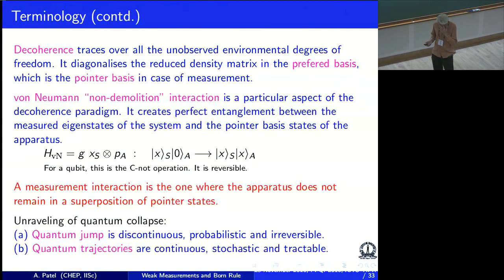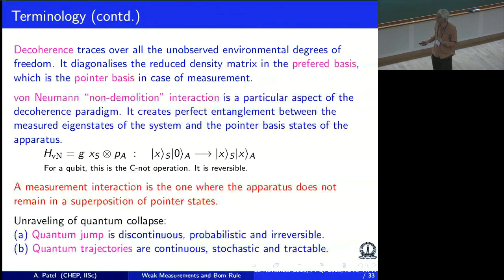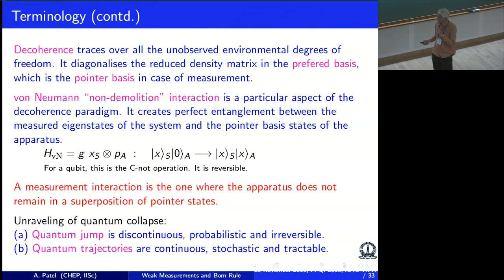To look at the process as a continuous evolution in time, I am looking at a picture which many times is referred to as unravelling of quantum collapse. Quantum collapse is not an instantaneous process — it takes place over time gradually. What this unravelling does is produce the history during that measurement time. There are quantum jumps, which are the discontinuous and probabilistic version. And there are quantum trajectories, which are continuous, stochastic, and tractable histories connecting the initial and final states. I am going to describe how to construct these quantum trajectories and how to understand them.